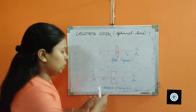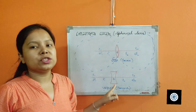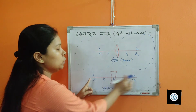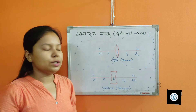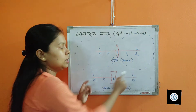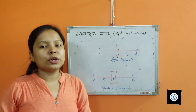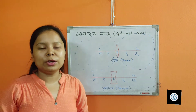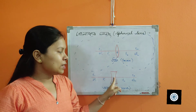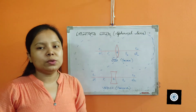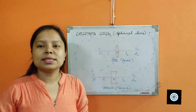For a concave lens similarly, there will be two centers of curvature. The line joining the two centers of curvature is called the principal axis, and the center point of the lens is called the optical center.